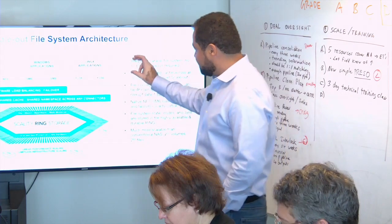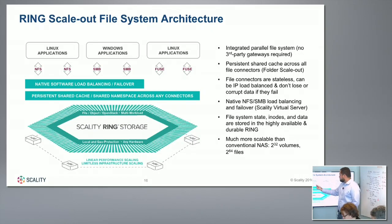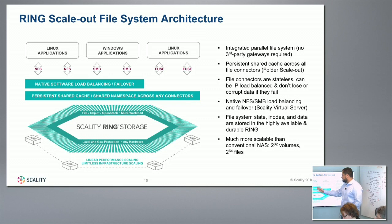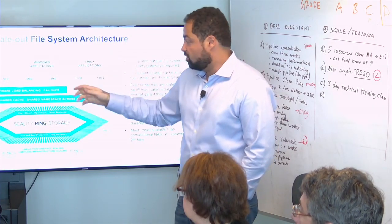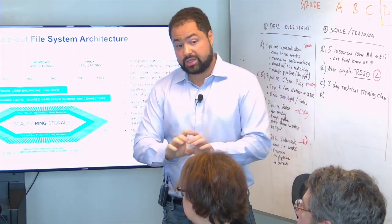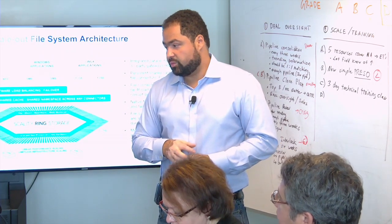This is our distributed file system — a set of connectors in front of the object store that can do NFS for Linux applications, SMB/CIFS for Windows, and Fuse, which is a more native way to do the file system for Linux. They all share the same namespace. We have a load-balancing layer developed for NFS so that if you lose a connector head, you can transparently fail over to another one. We also have a persistent cache to speed up lookups and directory operations. All the data itself, including folder information, is stored in the Ring. The Fuse connector has to run on the client; the others run on the storage nodes. Customers can choose to have a dedicated connector layer, but they don't have to. We do read caching but not write caching.